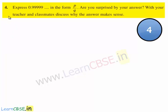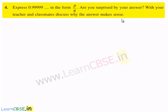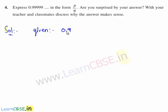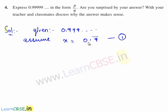Now let us move on to the fourth question. The fourth question is: express 0.999 and so on in the form of p by q. Are you surprised by your answer? Discuss with your teacher and classmates why the answer makes sense. So let us go for the solution. We shall express the given decimal expansion 0.999 and so on in the form of p by q. Let us assume x is equal to 0.9 bar. Consider this as equation 1.